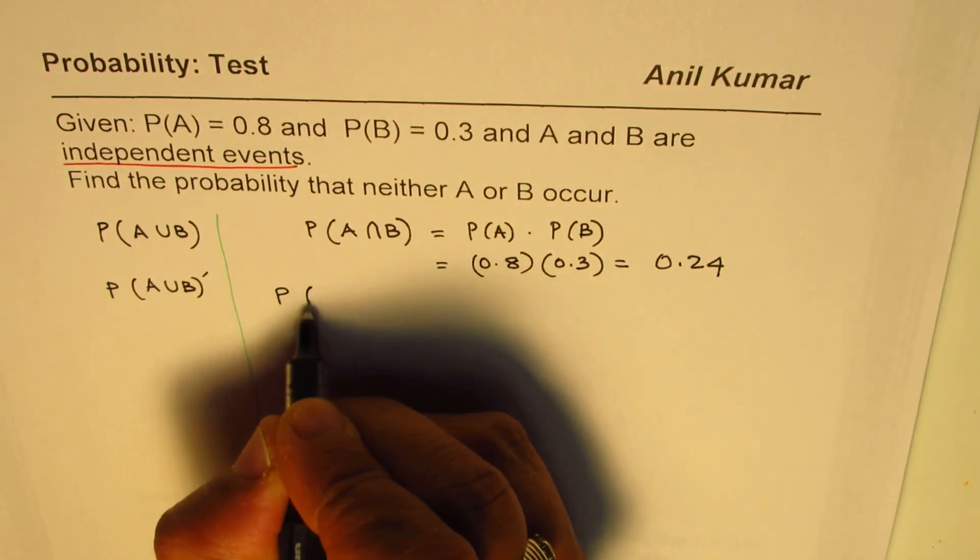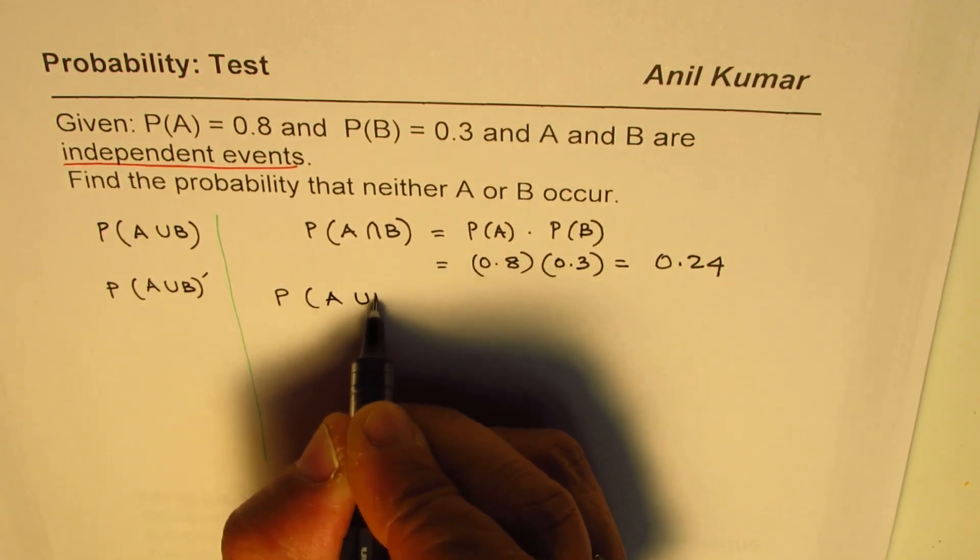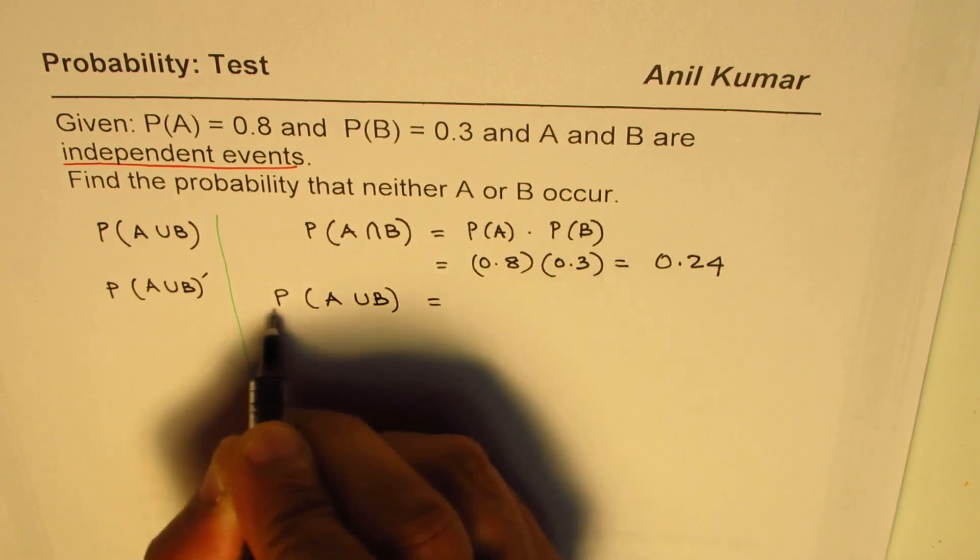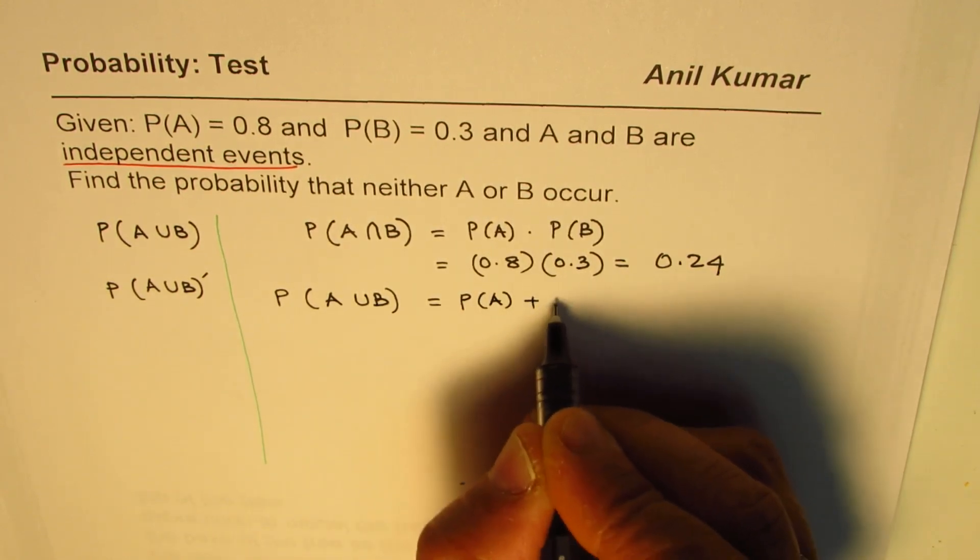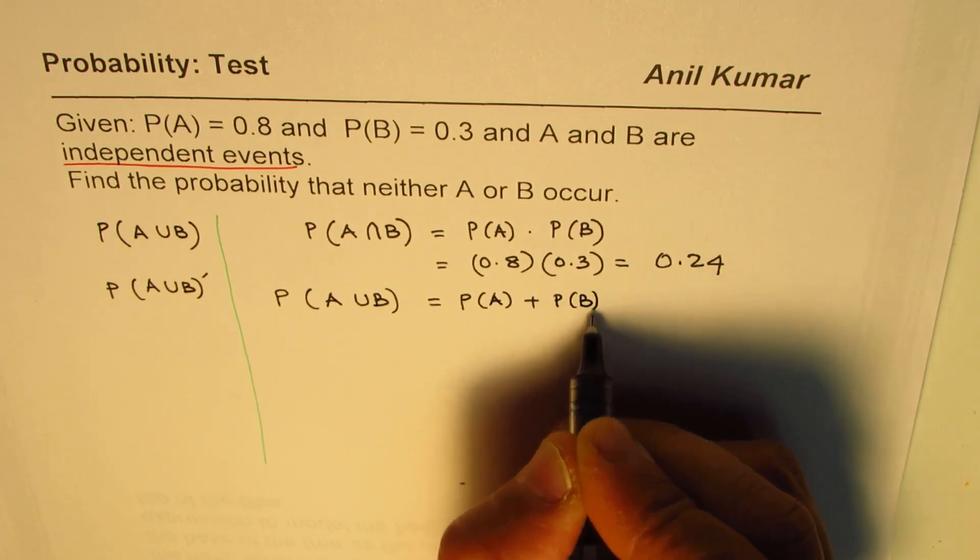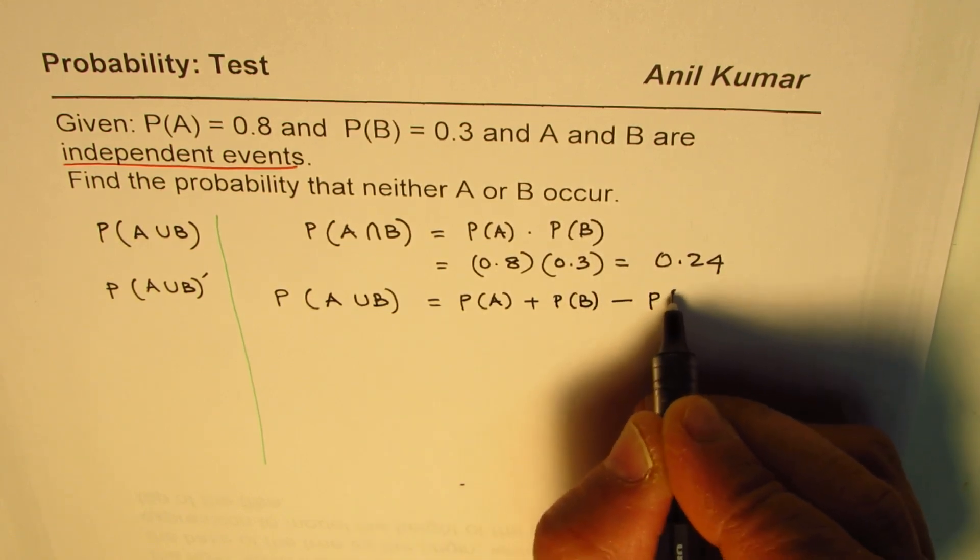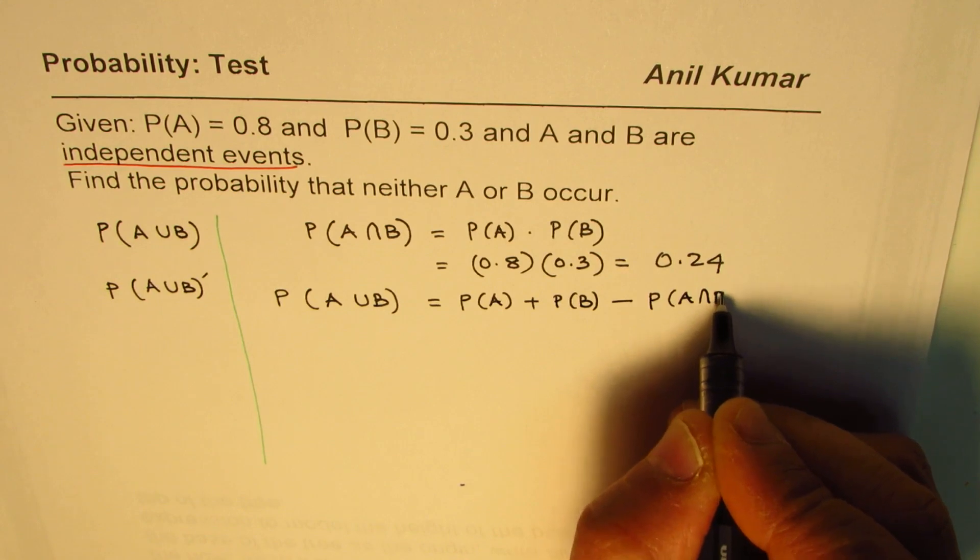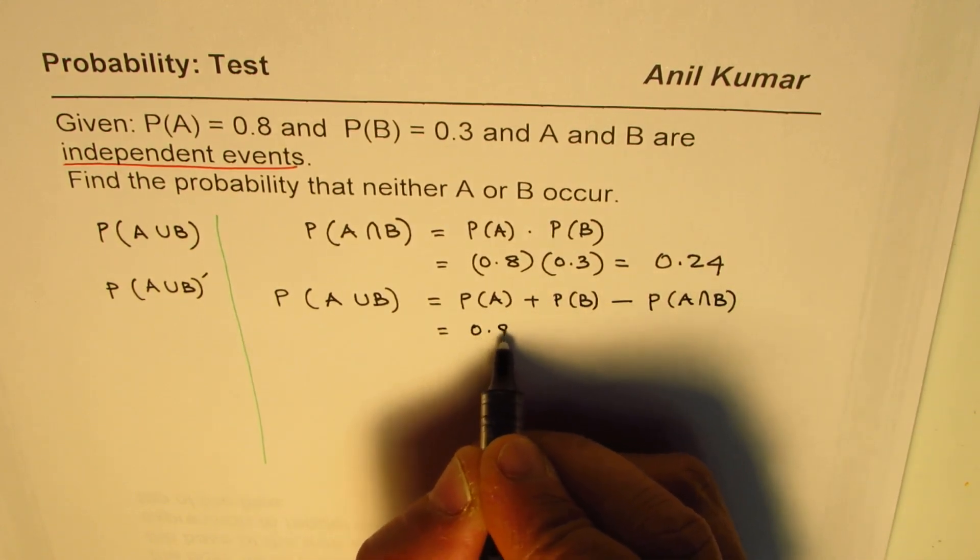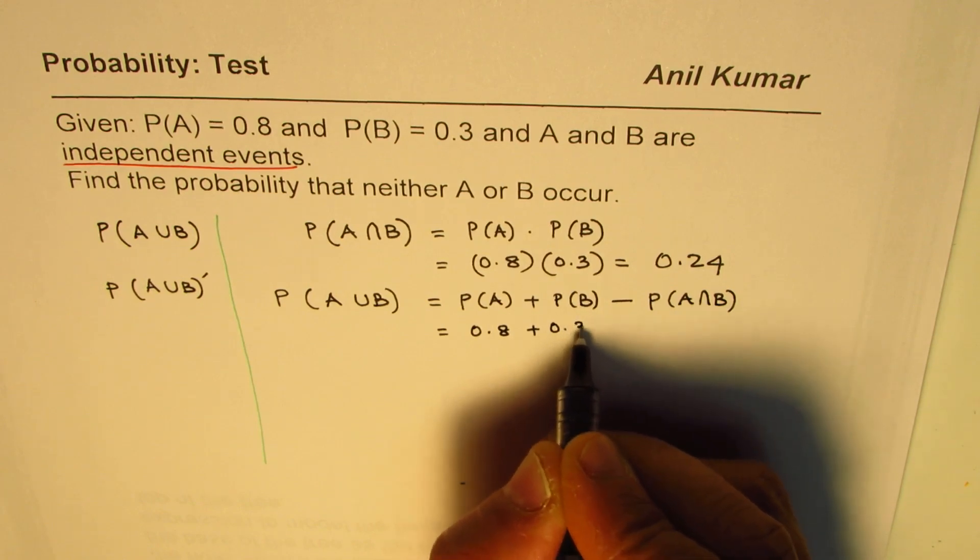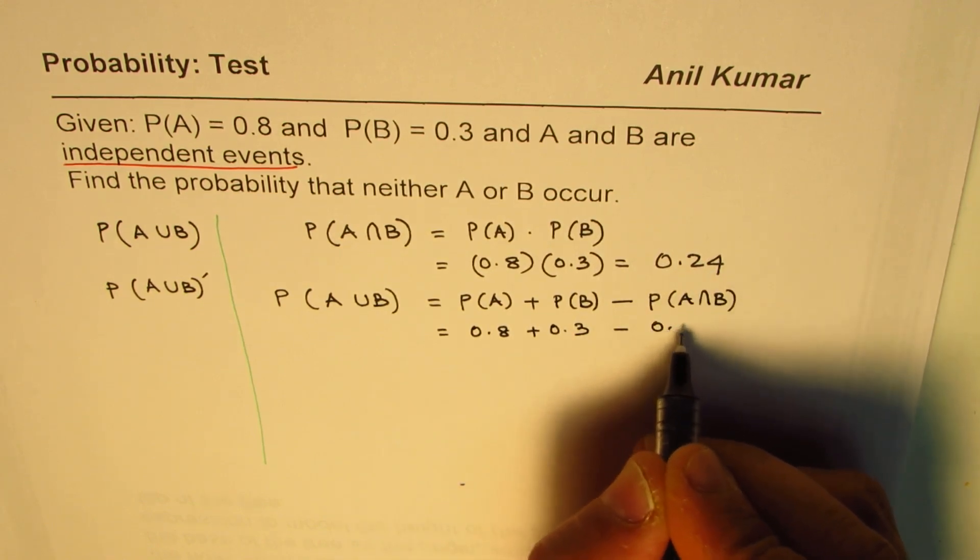Now, what is the probability of A union B? Probability of A union B is probability of A plus probability of B take away probability of A intersection B, right? So we are given probability of A as 0.8 plus 0.3 take away, we just found 0.24.